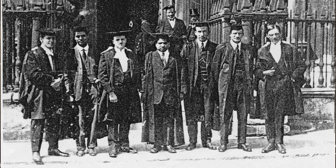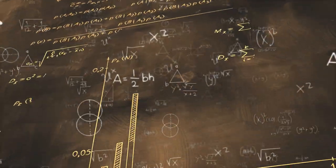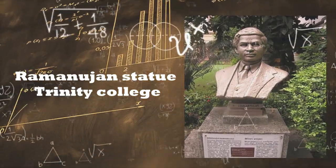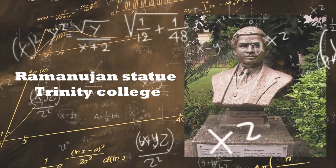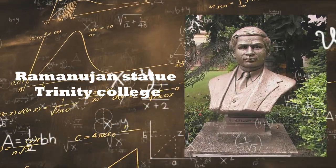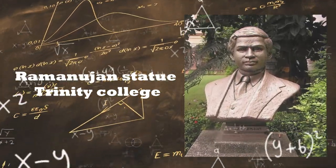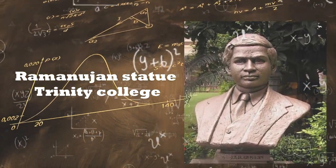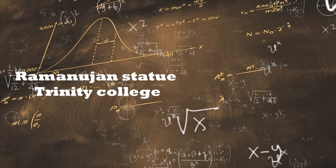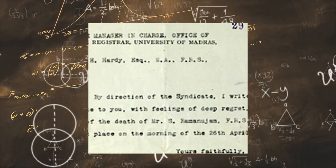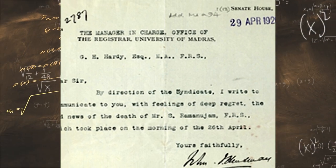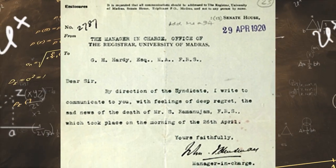He left England on February 27, 1919 and arrived at Bombay on March 17, 1919. In spite of his health gradually deteriorating, the best medical care and treatment available at that time were arranged for him. Unfortunately, everything was unsuccessful. He died on April 26, 1920 at the age of 32 at Chetput.